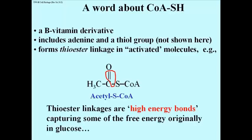Activated is a fitting word because it implies activity. Thioester linkages, like the phosphoanhydride linkages we saw earlier, are high-energy linkages that release a lot of free energy when hydrolyzed. So the thioester linkage in acetyl coenzyme A has captured, at least for the moment, some of the free energy that was originally in the nutrient glucose way at the top of glycolysis.